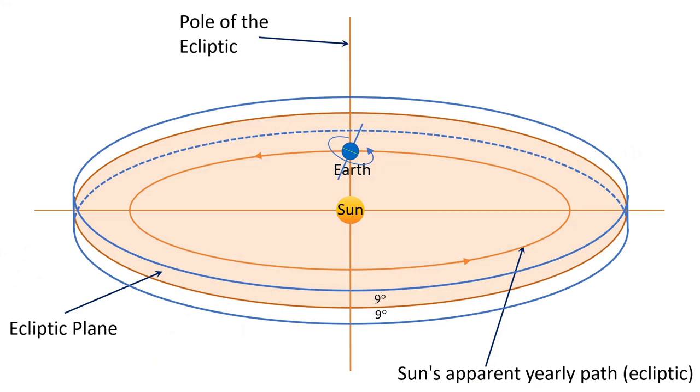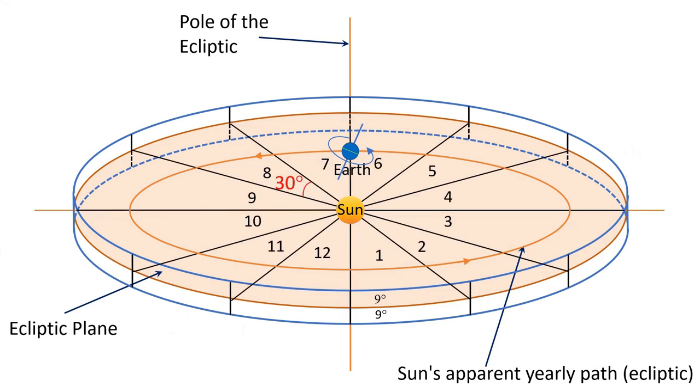This zodiac circle has been divided longitudinally into 12 equal parts of 30 degrees each called zodiac signs or rashis in Sanskrit. Together they make up 360 degrees of the zodiac.